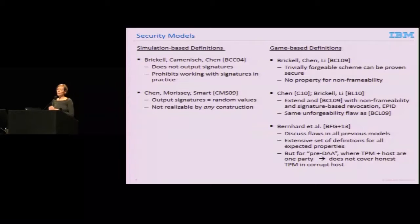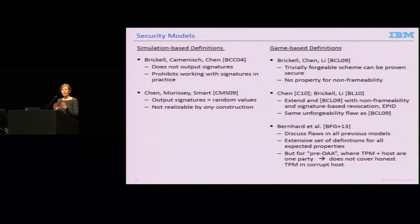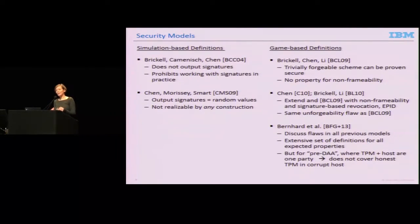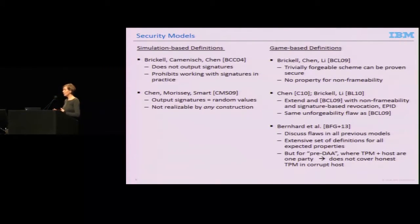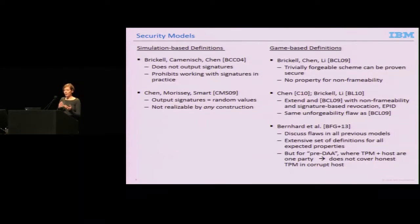There was a paper by Bernhard et al. where they discussed all these flaws and tried to solve it by presenting a very extensive set of different properties, eight or nine in total. Unfortunately, they did that not for real DAA but for pre-DAA. In pre-DAA, the TPM and the host are considered to be one party, meaning they share the same corruption status—either both honest or both corrupt. That doesn't capture the most interesting case: a corrupt host with an honest TPM where you want to bootstrap security. You have to assume both are honest, which renders the use of TPM basically useless.